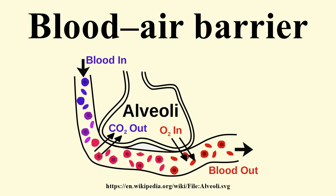Failure of the barrier may occur in a pulmonary barotrauma. This can be a result of several possible causes, including blast injury, swimming-induced pulmonary edema, and breathing gas entrapment or retention in the lung during depressurization, which can occur during ascent from underwater diving or loss of pressure from a pressurized vehicle, habitat, or pressure suit. Possible consequences of rupture of the blood-air barrier include arterial gas embolism and haemoptysis.